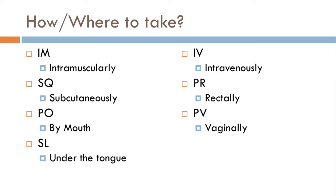Now we've discussed how often; let's move on to how or where to take medications. IM means intramuscularly — a needle going straight into the muscle, fairly deep. SQ, or sub-Q, means subcutaneously — not as deep, just into the fatty tissue, often given in the back of the arm. PO, which you'll see on most retail pharmacy prescriptions, means by mouth — take one tablet PO means take it by mouth. SL means sublingually — under the tongue. 'Sub' means under, 'lingual' means tongue.